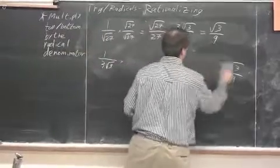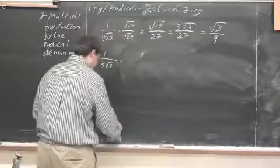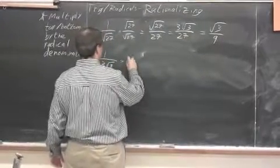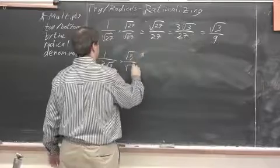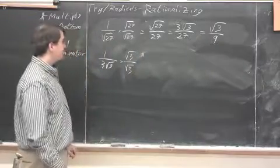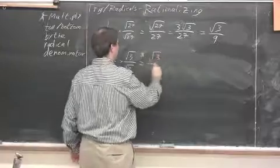So instead of doing all of that, which, again, it's not wrong, it's just less efficient, I could just multiply top and bottom by radical 3, I should say. And so that gives me radical 3 on top.